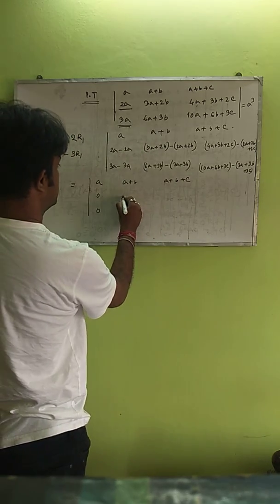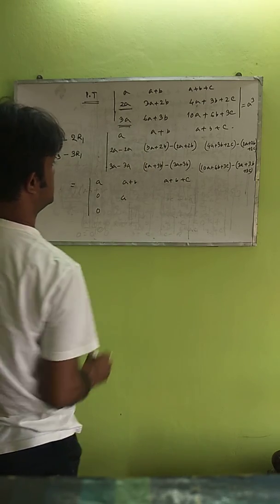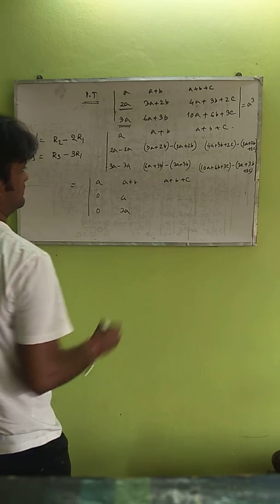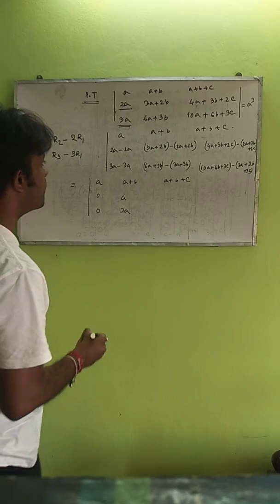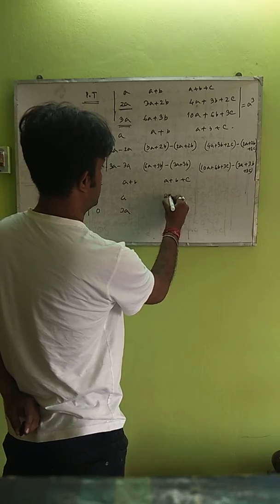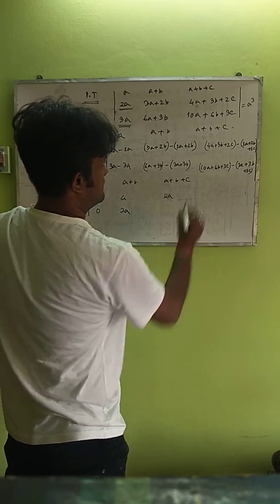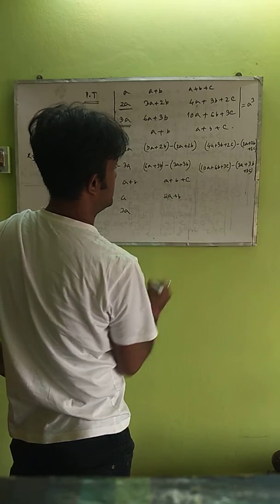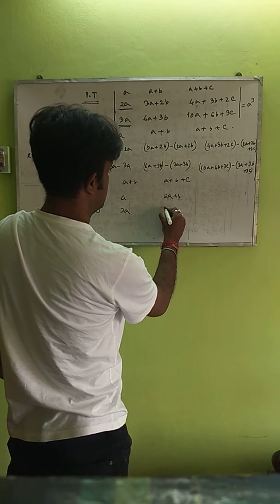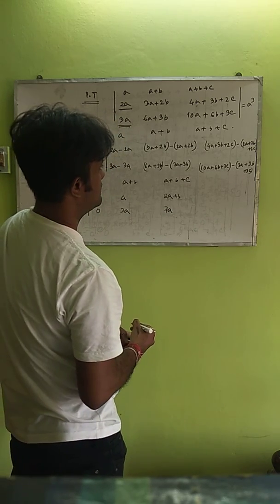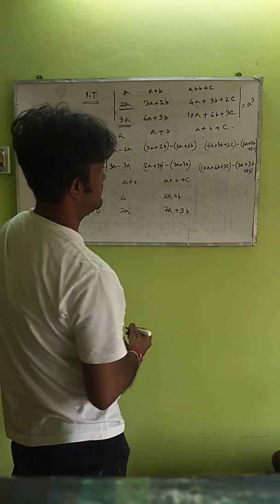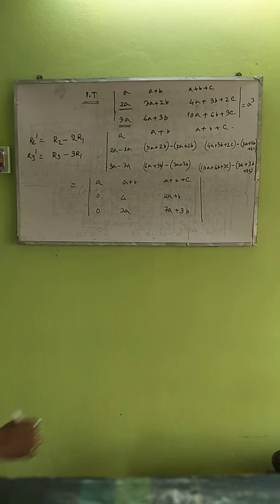For R3': 6A−3A = 3A; 3B−3B = 0; then 10A−3A = 7A; 6B−3B = 3B. So the simplified matrix has first column A, 0, 0 and computed entries in the other positions.